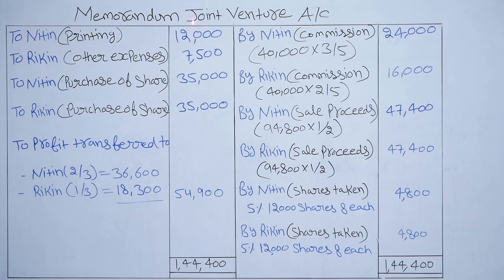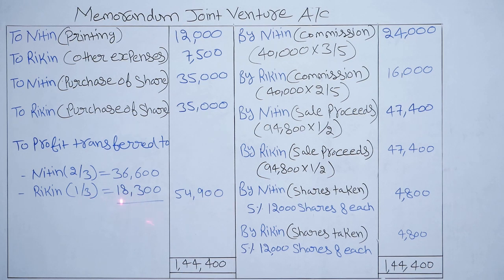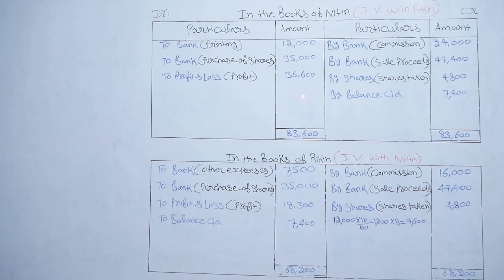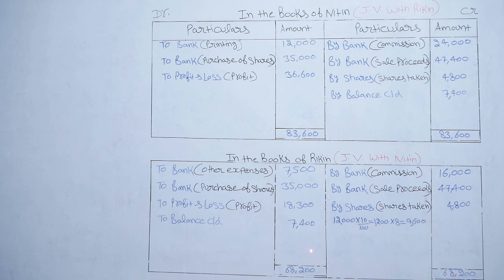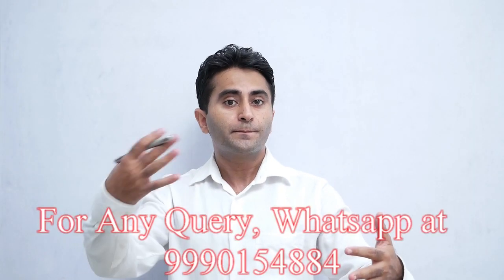The total of the credit side is more than the debit side, so there is a profit. Profit = Rs 54,900. Distributed in 2:1 ratio: 54,900 ÷ 3 = Rs 18,300. To Profit & Loss — Rs 36,600 for Nitin and Rs 18,300 for Rikin. In Nitin's account, total debit exceeds credit: By Balance Carried Down Rs 7,400. In Rikin's account, total credit exceeds debit: To Balance Carried Down Rs 7,400. If you have any doubts, please let me know in the comment section.